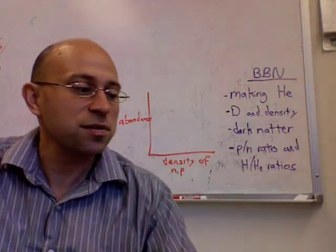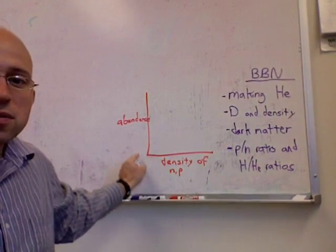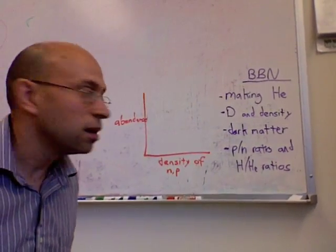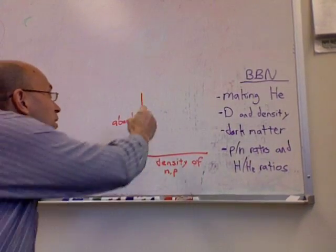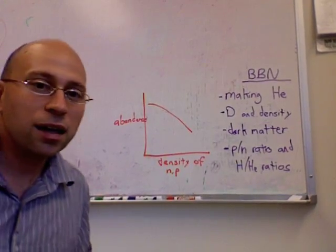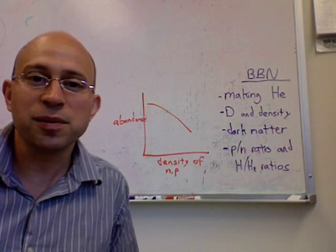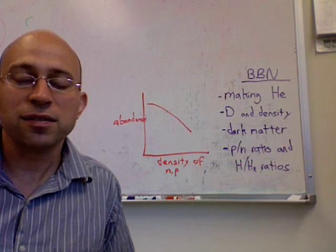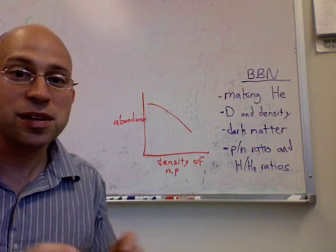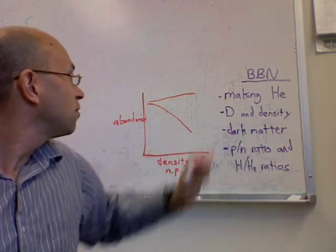So we can draw that here in this plot of abundance versus density of neutrons and protons. For deuterium that looks something like this. We can also do this with helium-3 and other light elements, and the curves look basically like that.